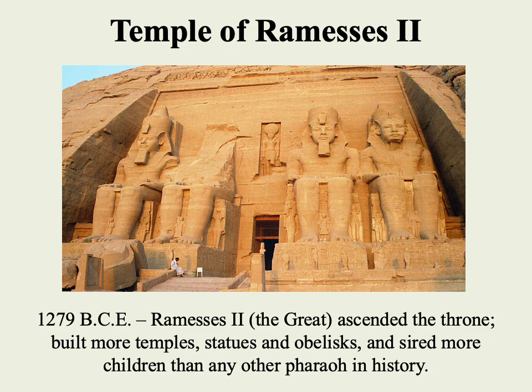Here we see the temple of Ramses II — that's the pharaoh we find in the biblical accounts, though it doesn't line up with the Hyksos chronologically. This temple dates back to 1279 BCE, the year that Ramses II, also known as the Great, ascended the throne. He would build an awful lot of temples, statues, and obelisks — a very typical Egyptian structure, looking like the Washington Monument in DC, which is modeled after Egyptian obelisks. He's also famous for having a huge number of children — there's a joke in Egypt today that pretty much everyone can claim descent from Ramses II.